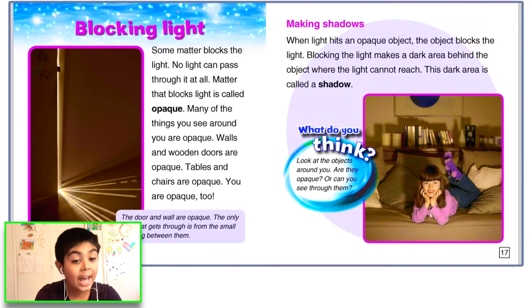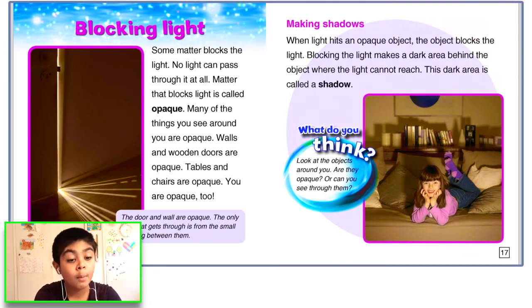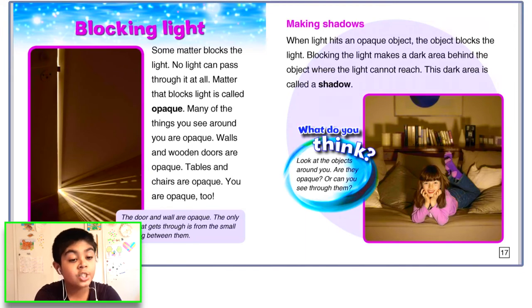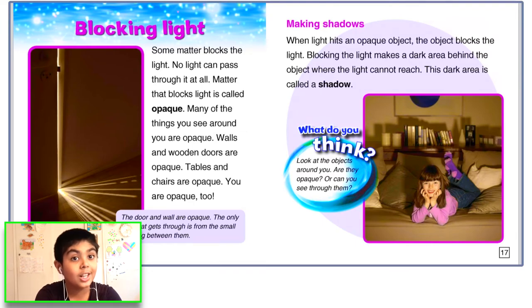Making shadows. When light hits an opaque object, the object blocks the light. Blocking the light makes a dark area behind the object where the light cannot reach. The dark area is called a shadow.